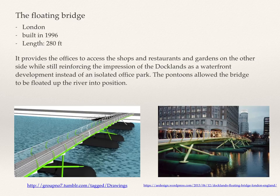The floating bridge is in London, built in 1996. It provides office workers access to shops, restaurants, and gardens on the other side, while reinforcing the impression of the docklands as a waterfront development rather than an isolated office park.